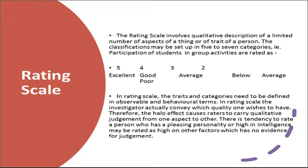Another important tool is the rating scale, which involves qualitative description of a limited number of aspects of a trait of a person. The traits are categorized from 5 to 7 levels. The traits and categories need to be defined in observable and behavioral terms — normally excellent, good, average, poor, and such dimensions are given. However, a limitation of rating scale is the halo effect, where the investigator carries a quality judgment from one aspect to another.